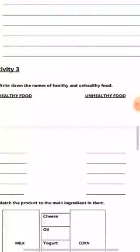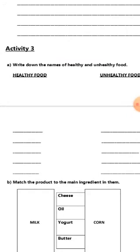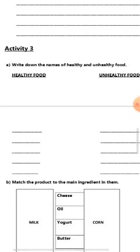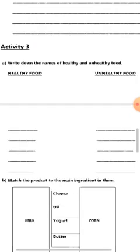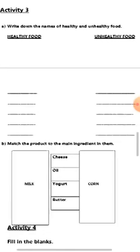First, write about the names of healthy and unhealthy food. You have to write names of 5 healthy and 5 unhealthy foods. Healthy food is what is good for our health, and unhealthy food is bad for our health. Think by yourself and write 5 names of healthy food and 5 names of unhealthy food.